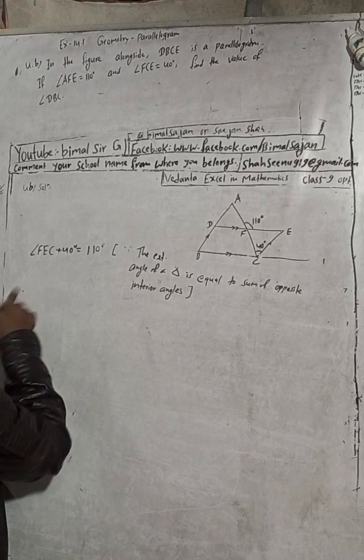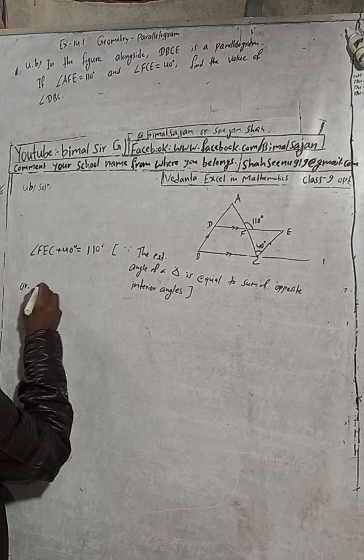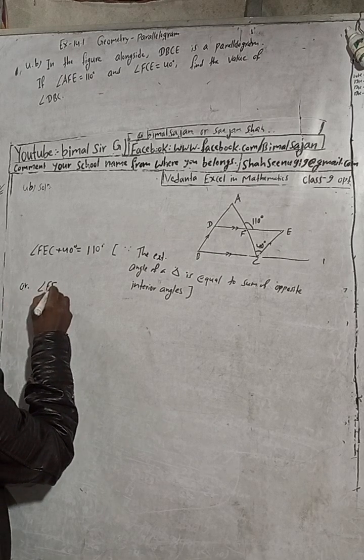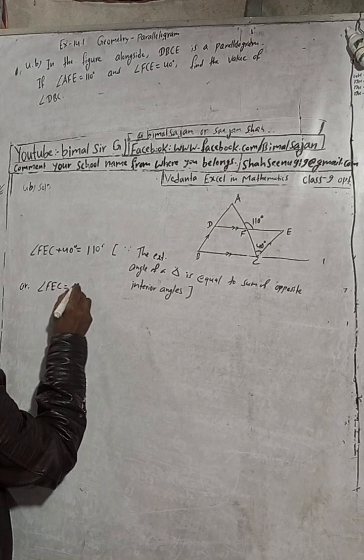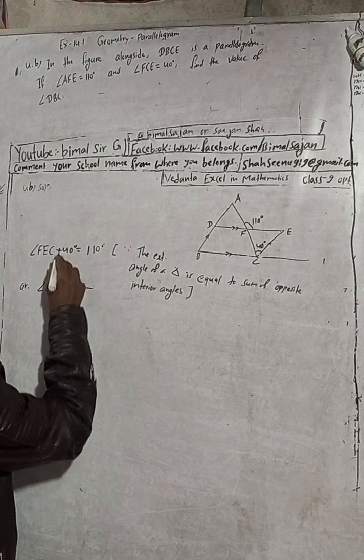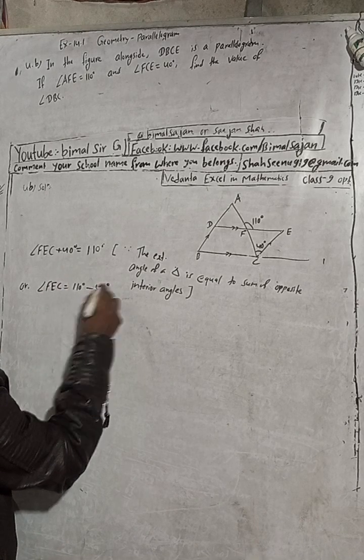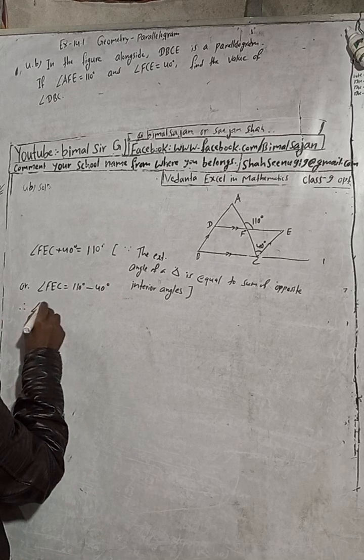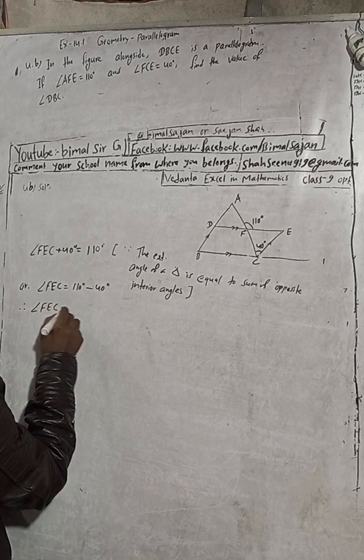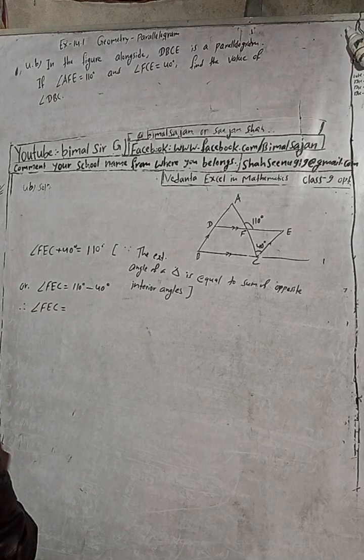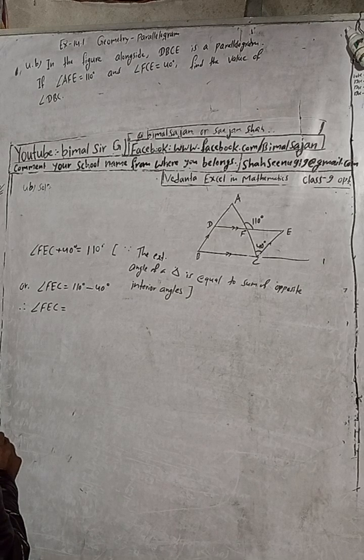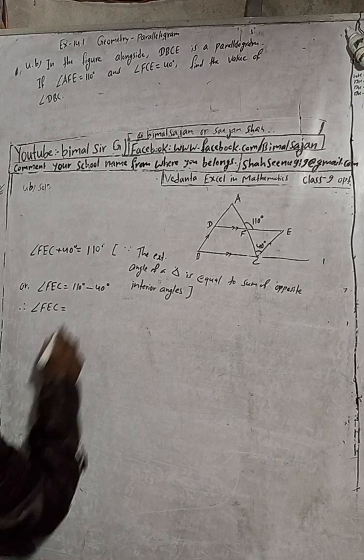Now solve this. Therefore, angle FEC is equal to 110 degrees minus 40 degrees. Therefore, angle FEC is equal to 70 degrees.